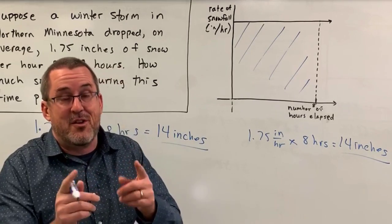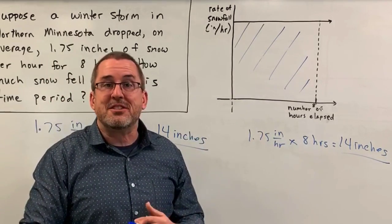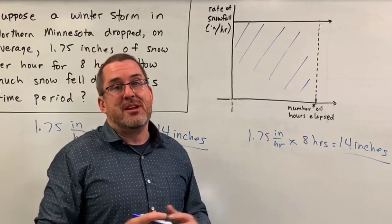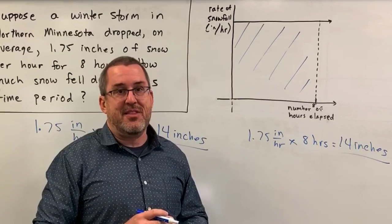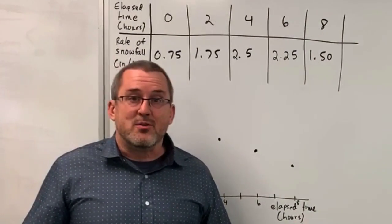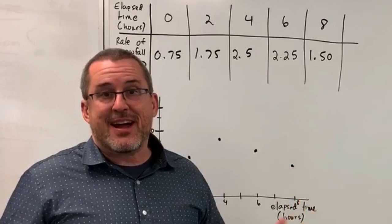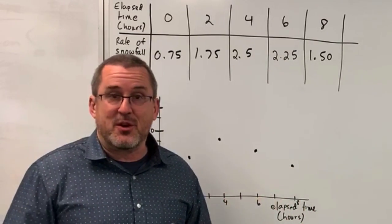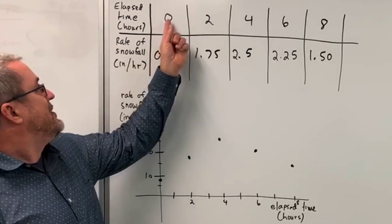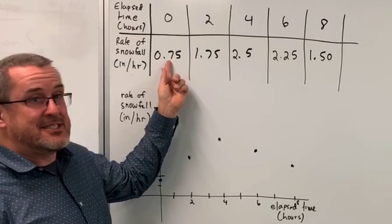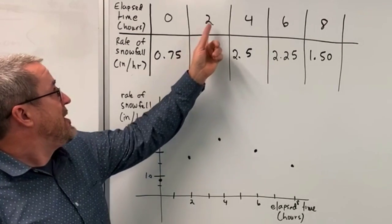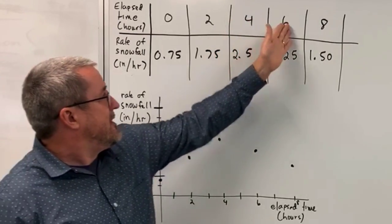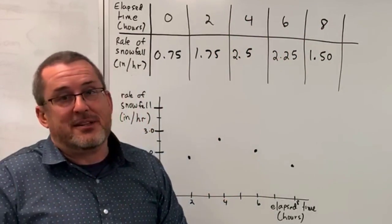Now that gets us set up for a more realistic view — snow doesn't usually fall at a constant rate for eight hours. What if the rate of snowfall varies during those eight hours? Suppose we were tracking this storm and measuring the snowfall, recording data every two hours. Initially the rate was 0.75 inches per hour, then two hours later we recorded 1.75 inches per hour, and so on for each two-hour increment of time.